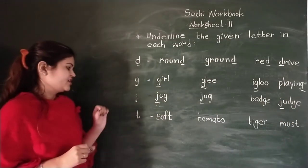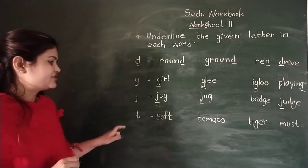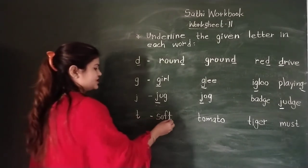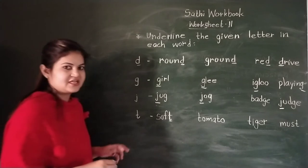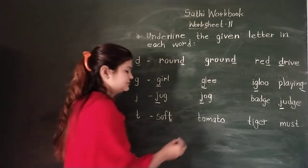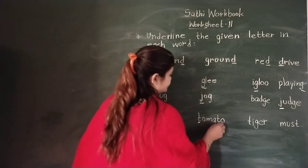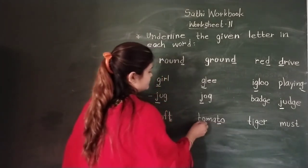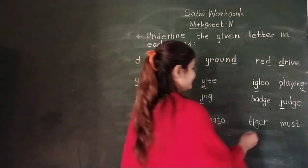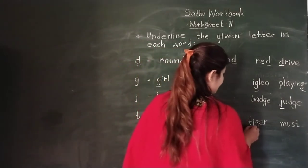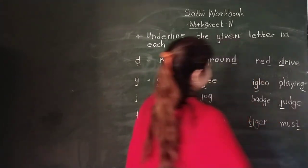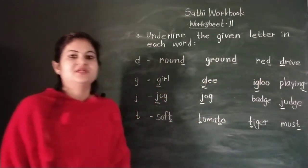Now there is letter T. Which letter is T? In 'soft', this is T. In 'tomato', T is used two times. In 'tiger', T is at the beginning. And 'must' - T is at the last. Okay, dear students.